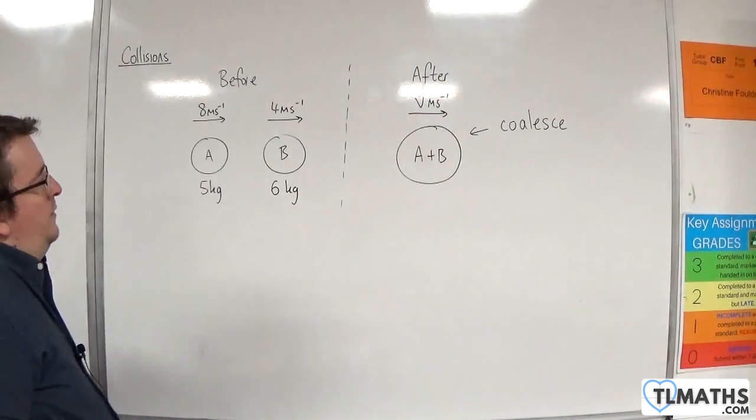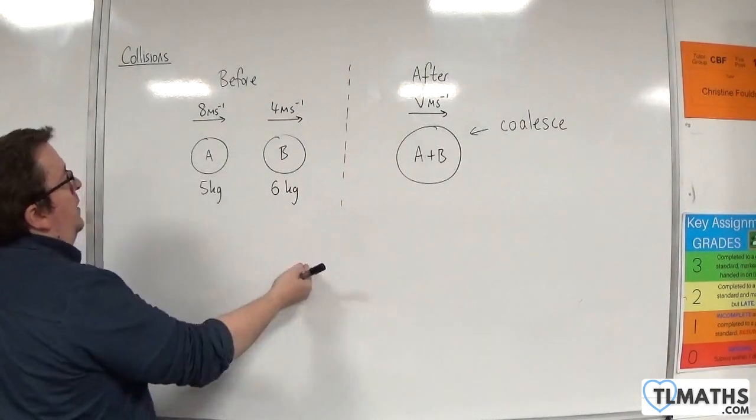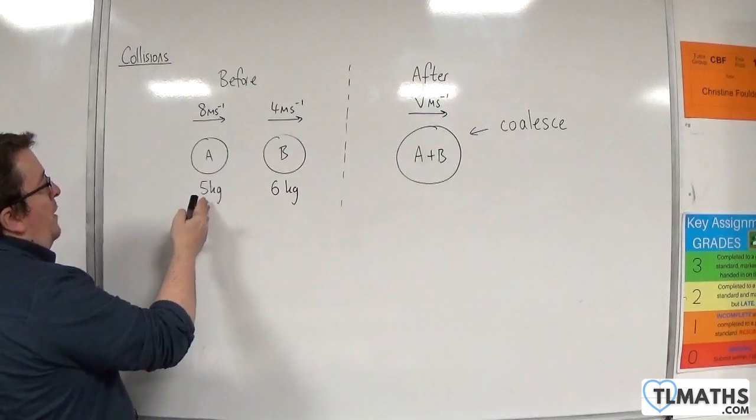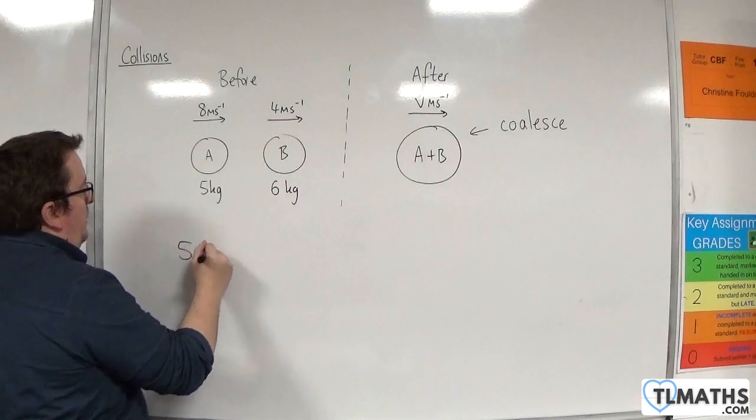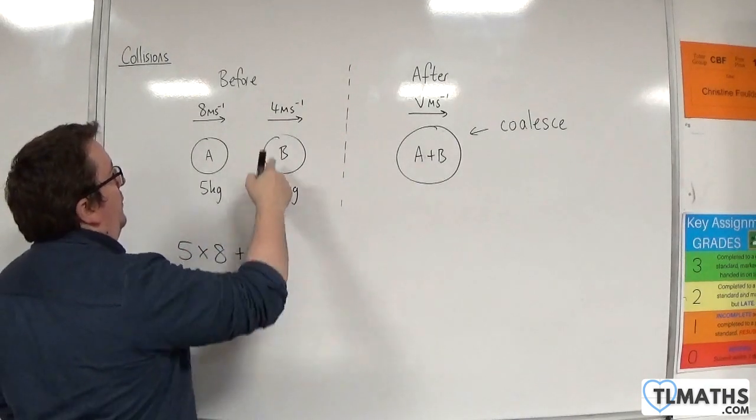Now, the total momentum before will be equal to 5 times 8, so the mass times your velocity, 5 times 8, plus 6 times 4.